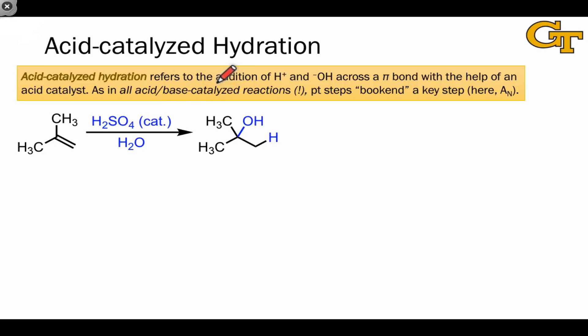Acid-catalyzed hydration refers to the addition, formally at least, of H-plus and OH-minus across a pi bond with the help of an acid catalyst. Water, on its own, is not acidic enough to protonate a double bond and generate hydroxide. And so we need an acid to get the process started.